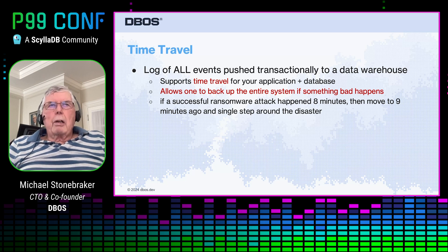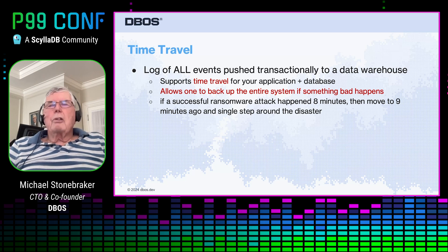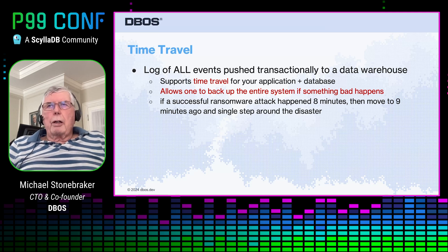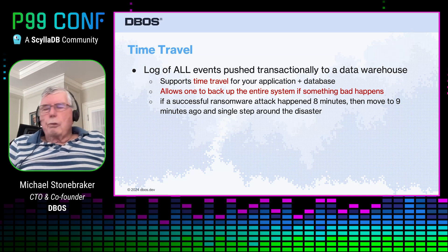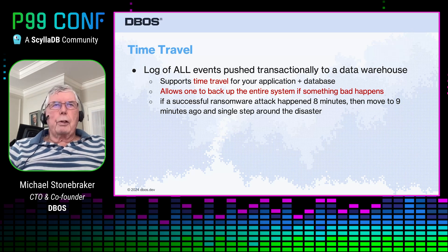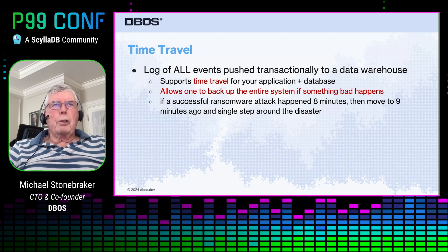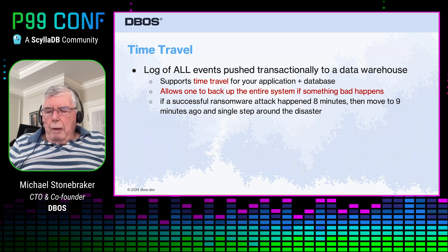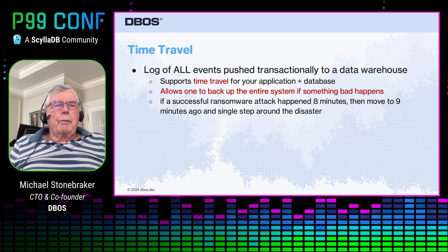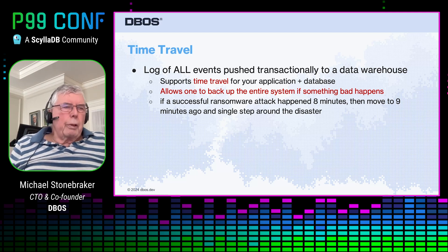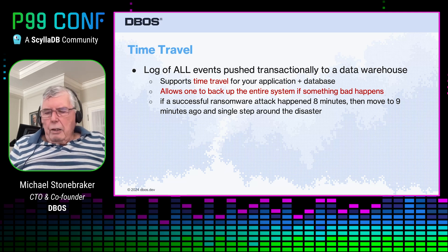So we log everything — your application plus the operating services state — and we log it to a data warehouse. We allow you to use your favorite data warehouse: think Vertica, think Redshift, think Presto, whatever your favorite one is. And you can keep this log for as long as you want to, as long as you're willing to pay for the space. So that means you can recover from ransomware attacks very easily. If there's a rogue transaction, you can simply back up, get rid of it, and keep going. So time travel is a really nifty feature.